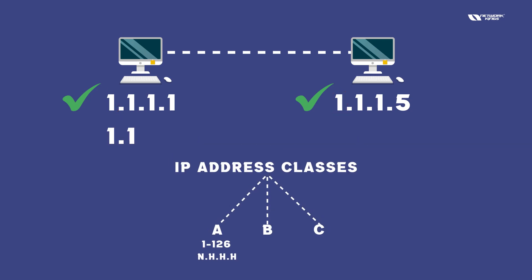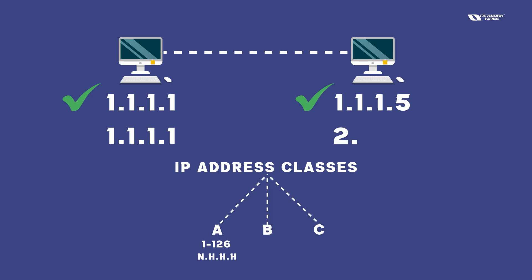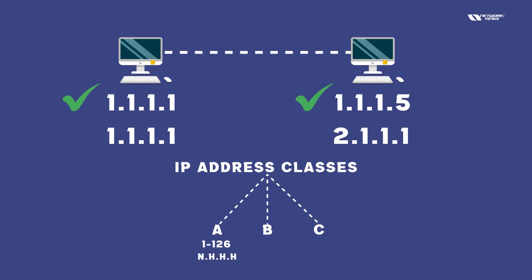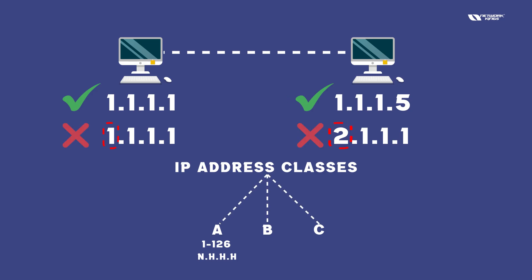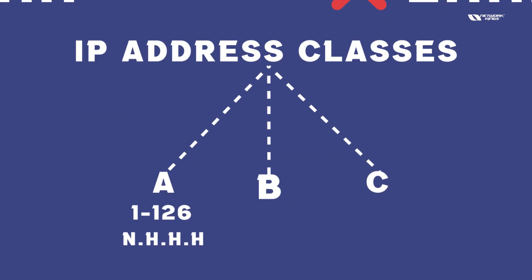What if I give 1.1.1.1 and here 2.1.1.1? The first part is not matching, so they will not communicate.